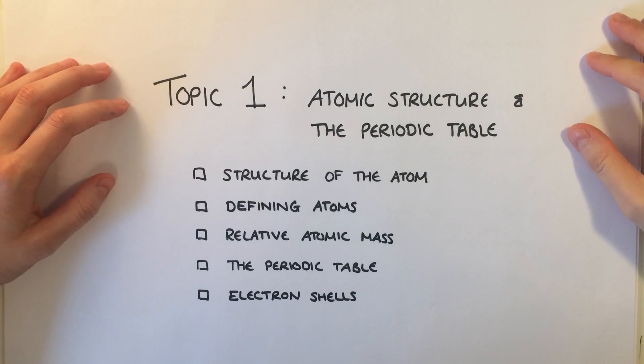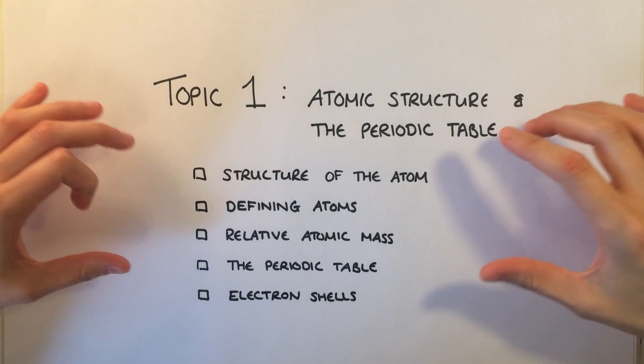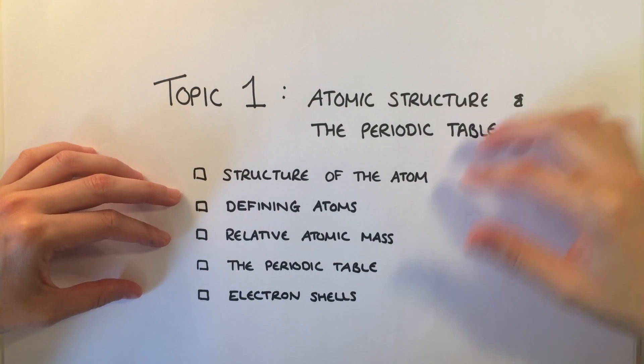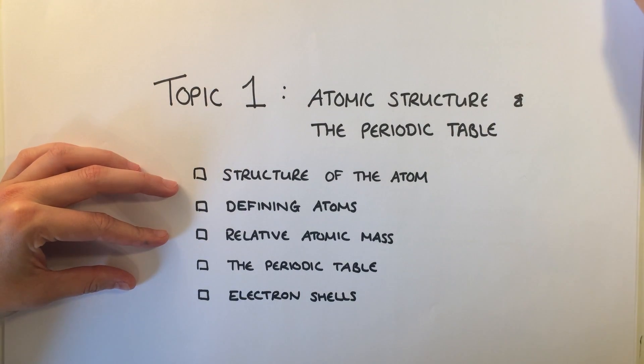Additional science chemistry topic one: atomic structure and the periodic table. We're going to be looking at the structure of the atom, defining atoms, relative atomic mass, the periodic table, and electron shells.